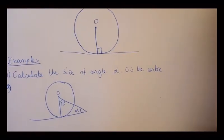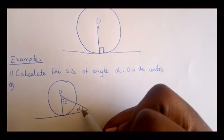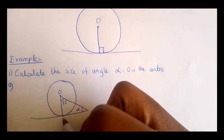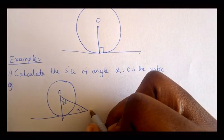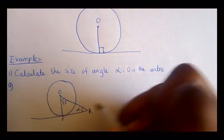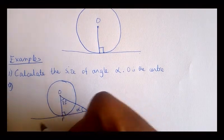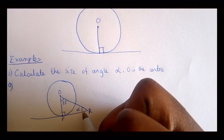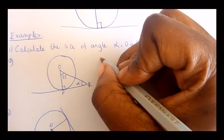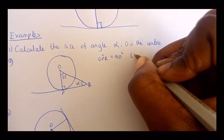For example one, calculate the size of angle alpha given that O is the center. This is angle alpha and we have an angle of 72 degrees. Let us name the points: this point is P and this point is R. The angle we are looking for is angle ORP, and from what we said about tangents, this angle is a right angle since the radius and the tangent are perpendicular. So angle OPR is equal to 90 degrees because of the tangent theorem.